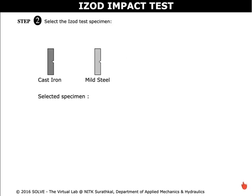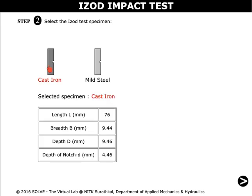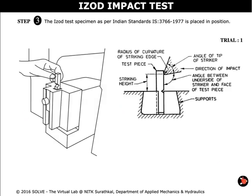Next we select the test specimen. Here I'll be selecting cast iron. Click on the cast iron. This is the specification of the cast iron.